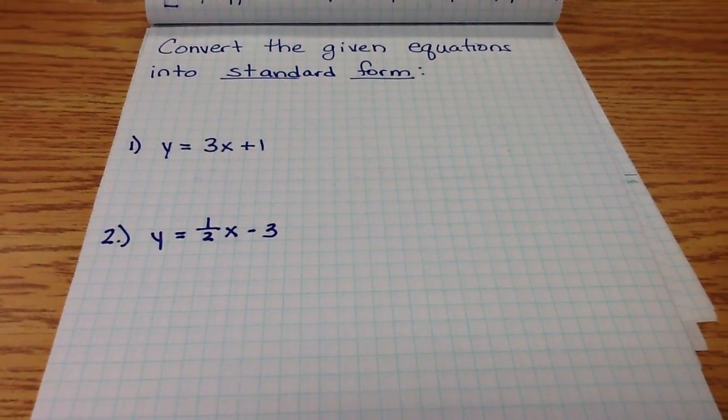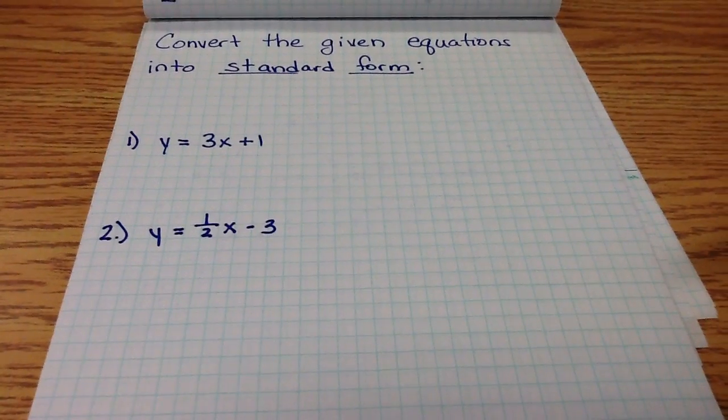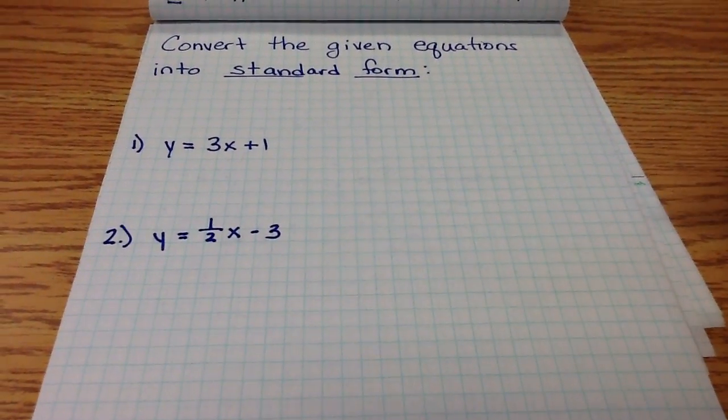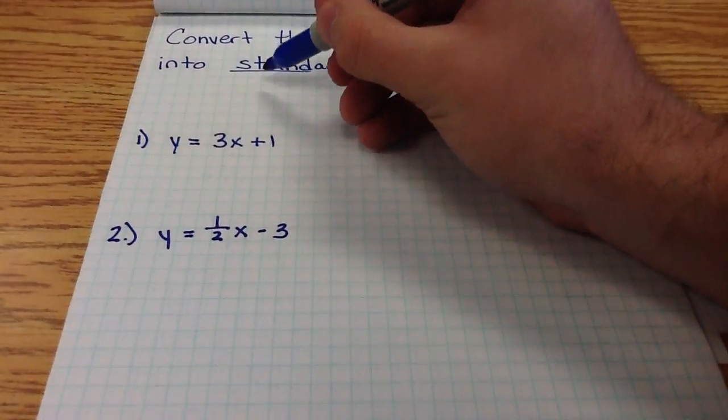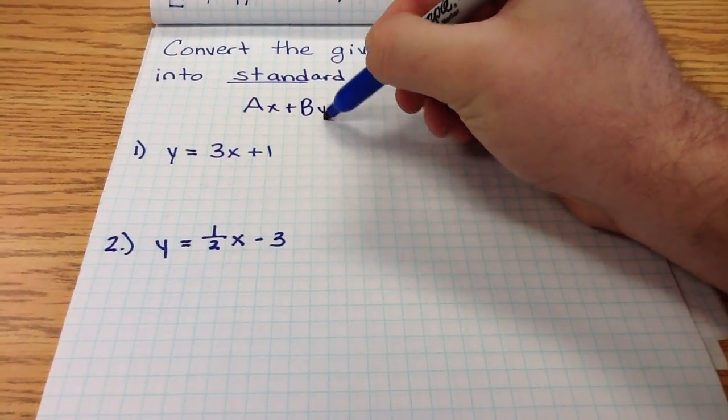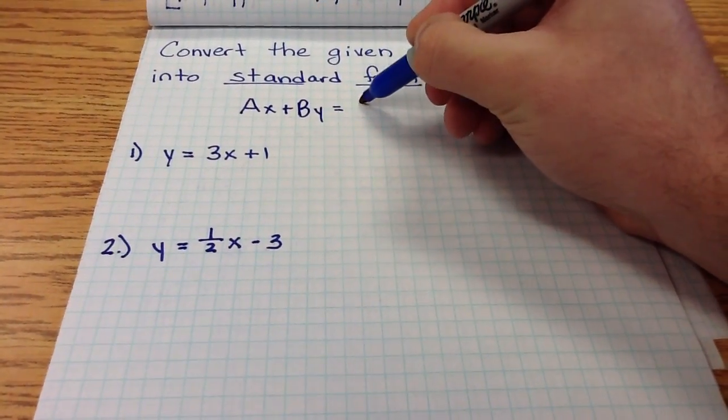But before we begin those problems, we have to remember what standard form looks like by looking at the general form. From our notes, we remember that the general form of a line is Ax plus By equals C.